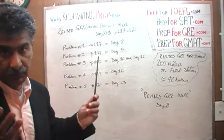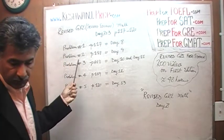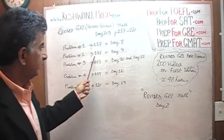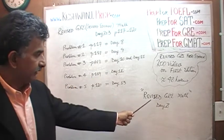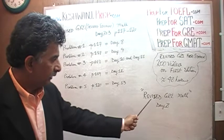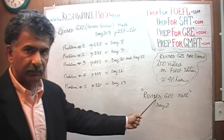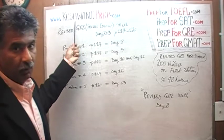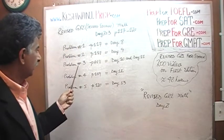But it's a new edition now. Problem number two on the following page, page number 118, was covered on day number nine. Just type in Revised GRE math, day nine. Always use Revised GRE math and then the day number. If you have trouble finding it, try putting my name — Keshwani — along with it and it will pop right up.